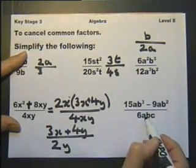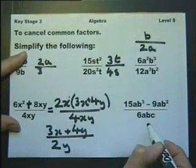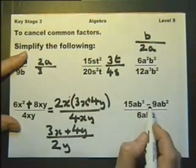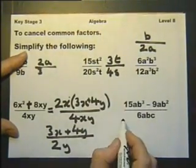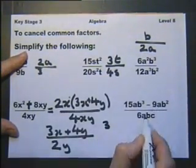The same thing applies here. If you start canceling that 6 with that 9, or that 6 with that 15, it's wrong. The right approach is to factorize the top. 3 goes into 15, and 3 goes into 9.